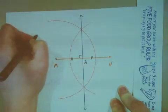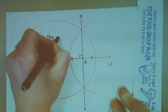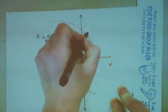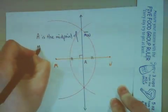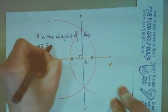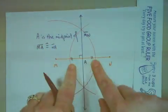And I know that point A is the midpoint of segment MN. Again, I also know that segment MA is congruent to segment NA. They are of equal length.